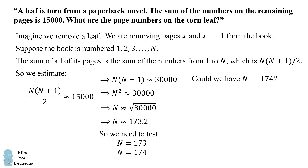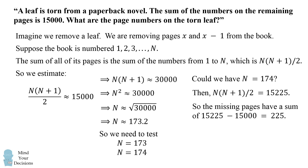Since 173.2 is not a whole number, we'll consider the adjacent whole values and test n equals 173 and n equals 174. First, let's try n equals 174. In that case, the sum of all the pages in the book will be 15,225. The two missing pages will have a sum of 225, and we can readily solve that those will be x minus 1 equals 112 and x equals 113. Originally I thought that was the answer to this problem.